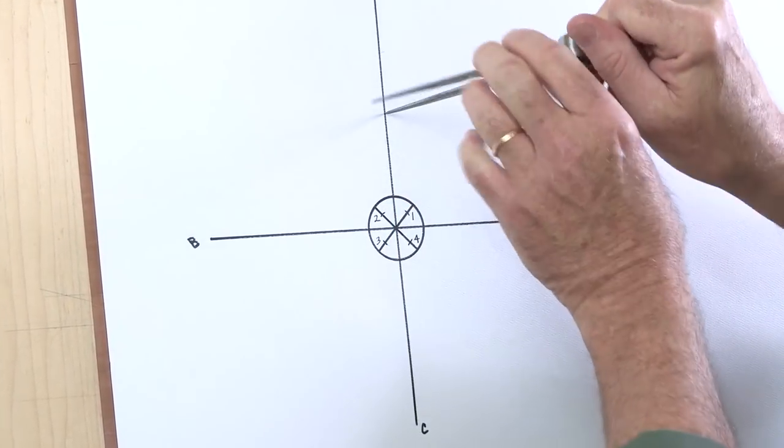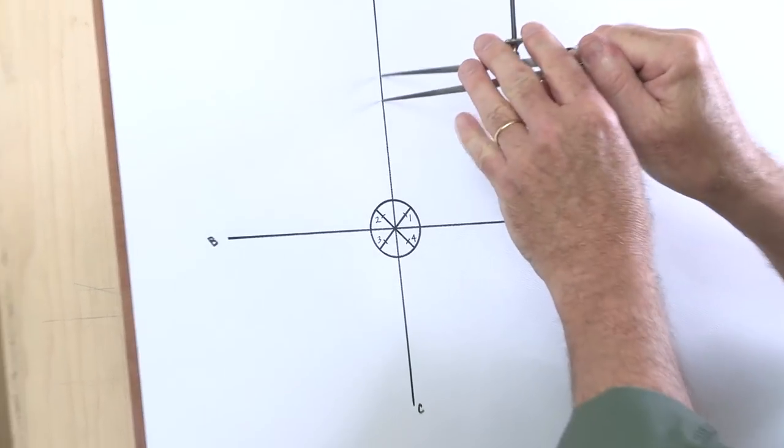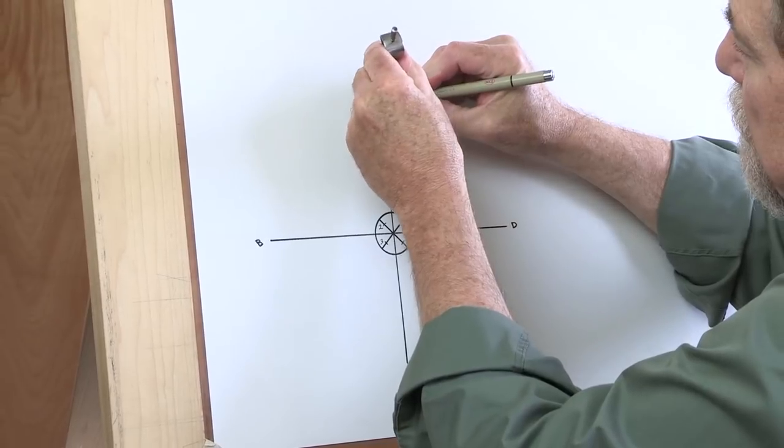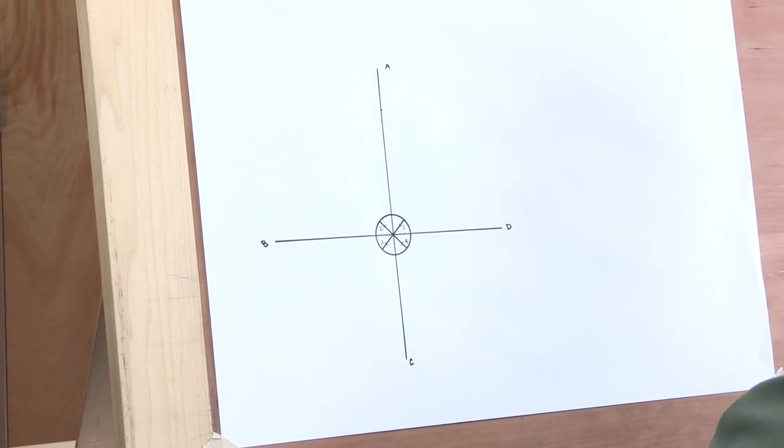One, two, three, four, five, six. That's my starting point for my volute, so I'm going to make a little reference right there.